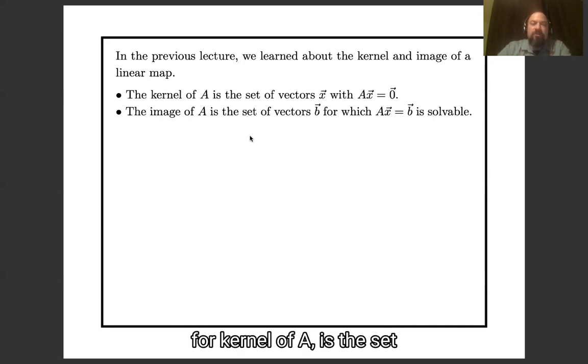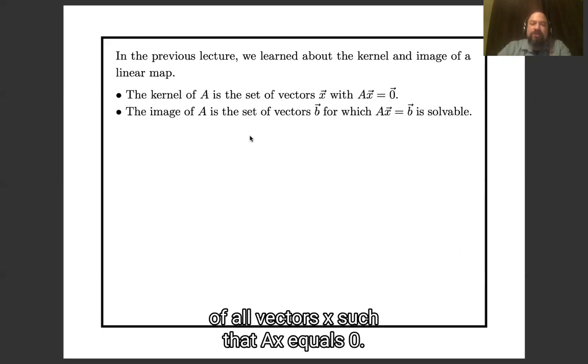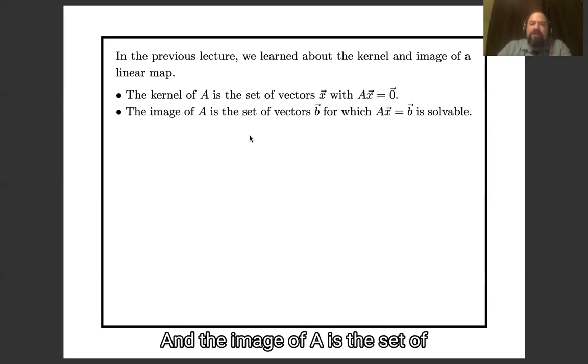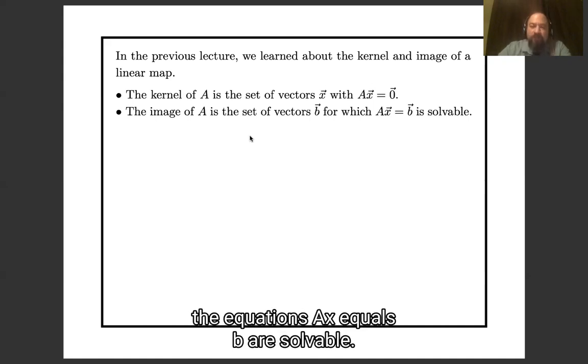So to remind you, the kernel of A is the set of all vectors x such that Ax equals zero. And the image of A is the set of those vectors b for which the equations Ax equals b are solvable.